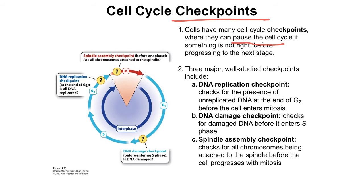There are three major well-studied checkpoints. First is the DNA replication checkpoint, which monitors whether all the DNA is fully replicated. If DNA is not fully replicated, you won't form sister chromatids and therefore cannot distribute a complete complement of the genome to daughter cells. This checkpoint monitors for under-replicated DNA at the end of G2 before the cell enters mitosis.